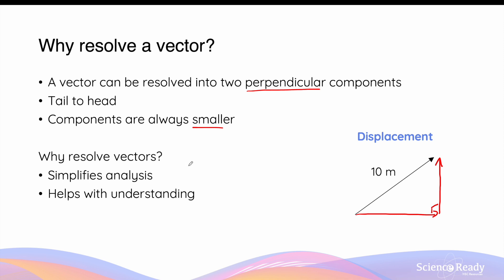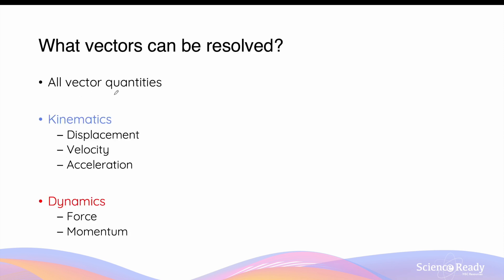So why do we resolve vectors? The two main reasons are to simplify the analysis of a more complex problem, and also to help us understand a complex problem in physics. All vector quantities can be resolved into perpendicular components. This includes kinematic variables such as displacement, velocity, and acceleration, which will be the focus of this video. In another video we'll walk through how to resolve dynamics vectors such as force and momentum.